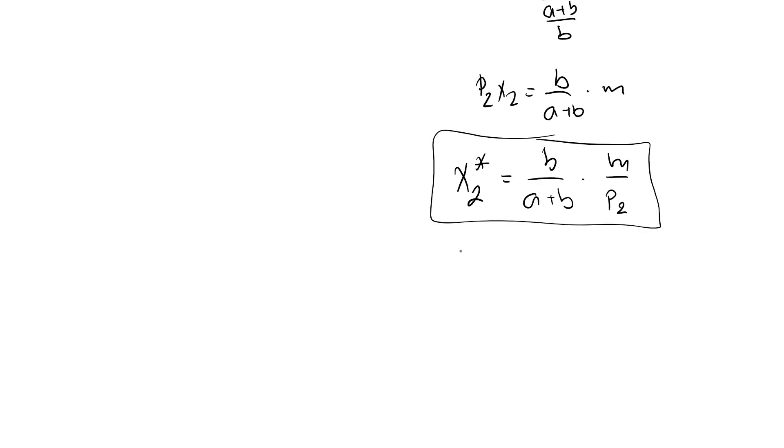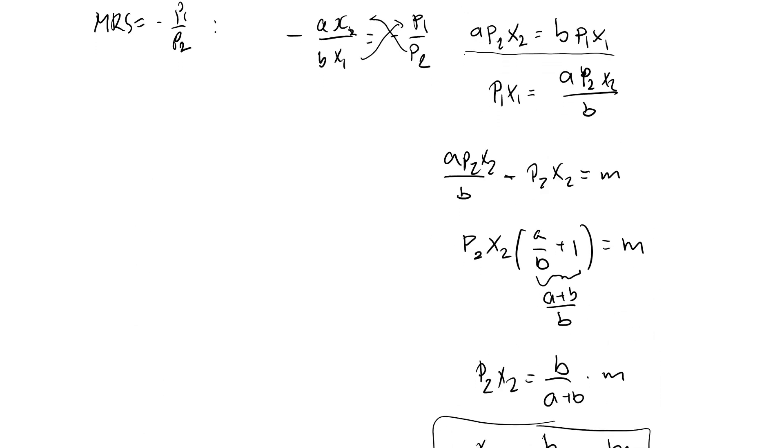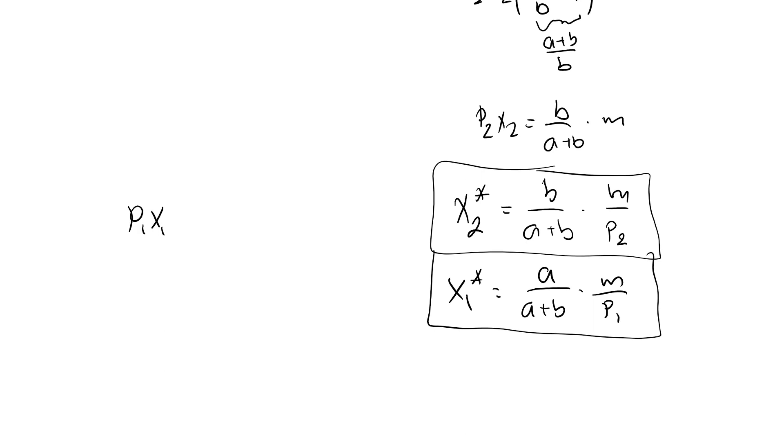Just by symmetry of this problem, x1 star must be equal to a over a plus b times m over p1. If you don't like this symmetry argument, just remember we found that p1x1 over here needs to be ap2x2 over b, which is a over b, p2 times x2 is b over a plus b times the p2 cancels. The b cancels, and we have this result. I think these two formulas are useful to have in handy because many microeconomic problems are based on the Cobb-Douglas utility function.